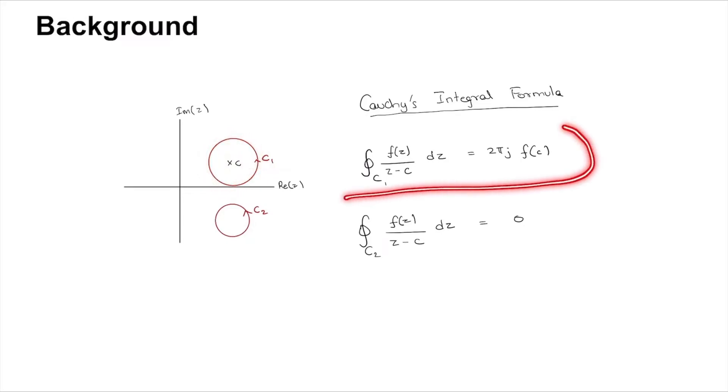However, the same integrand over a different contour when the pole is not included follows this formula. Finally, the positive direction of integration is anti-clockwise for this integral.